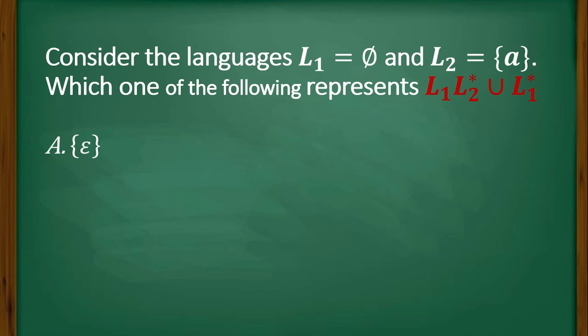Option A is {ε}, that is a language with only one symbol, Epsilon. B is φ, that is a language containing no symbol or no string, empty language. Option C is a*, that means any combination of a's, and option D is {ε, a}.